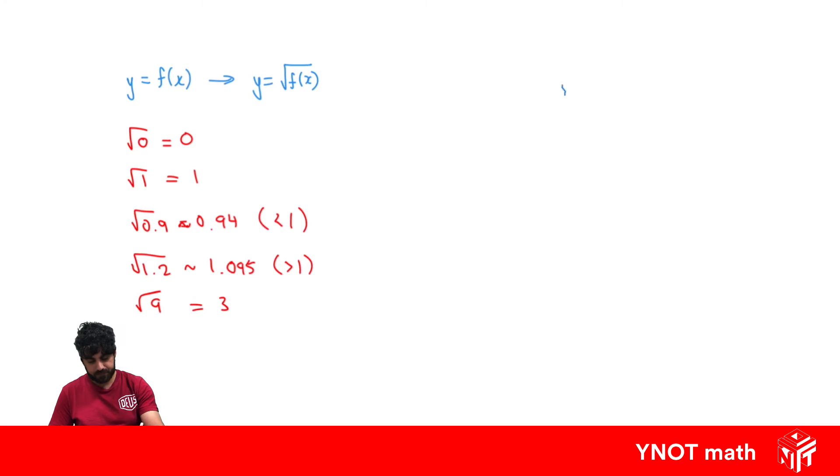Let's look at a simple example where we have f of x equals x plus 1. It's just a straight line going through 1, and now we want to graph the square root of that function, g of x equals root x plus 1.